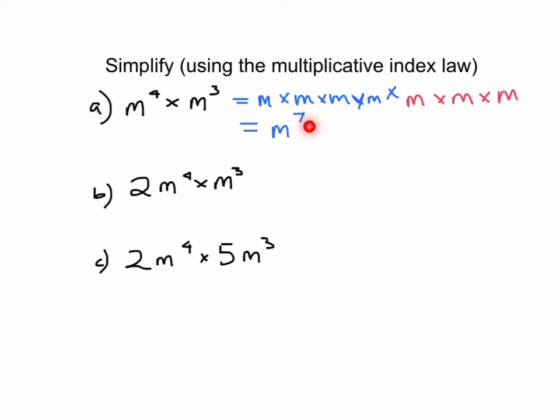So let's do this again over here. This time we've got a 2 in front of the m's, but this time you have 2 times m, and you add the indices here so you've got 4 plus 3 which is 7.